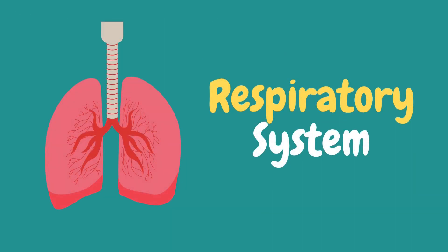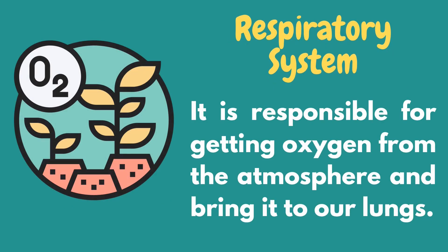To start this lesson, let's define the respiratory system. The respiratory system is the network of organs and tissues that help you breathe. It includes your airways, lungs, and blood vessels. The muscles that power your lungs are also part of the respiratory system. These parts work together to move oxygen throughout the body and clean out waste gases like carbon dioxide. To attain this function, let's describe and discuss the different parts of the human respiratory system.